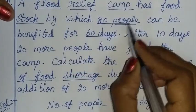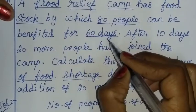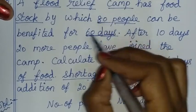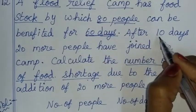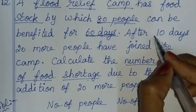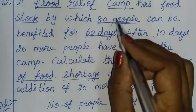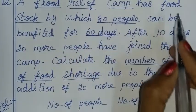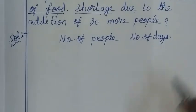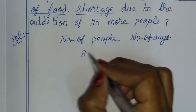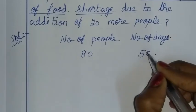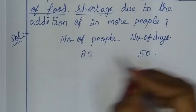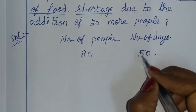In the beginning, there are 60 days of food stock. In the first 10 days, 80 people used the food stock. So after 10 days, we have to use the food stock for the remaining 50 days.